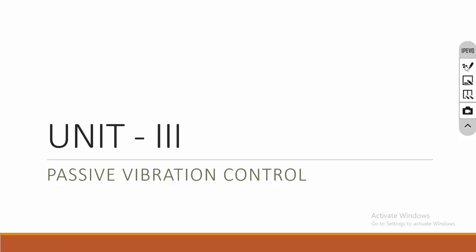In this lecture I am going to start the third CO, which is passive vibration control. In general, for every system we have to measure the vibration at the initial stage. After measuring the type and nature of the vibration, we have to control it. There are two types of vibration control strategies: active vibration control and passive vibration control.